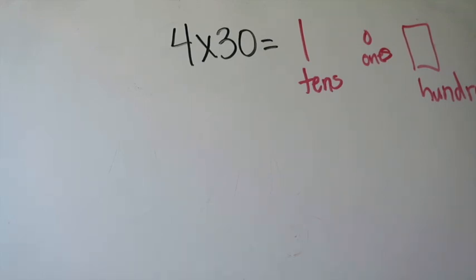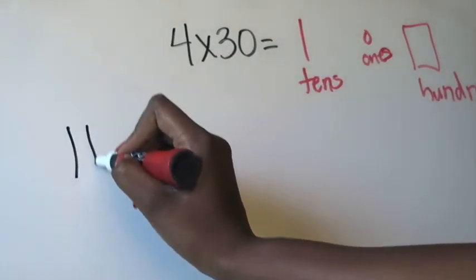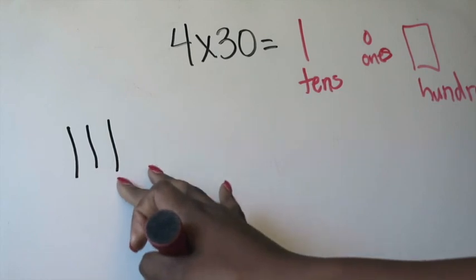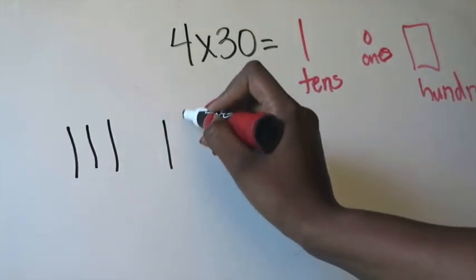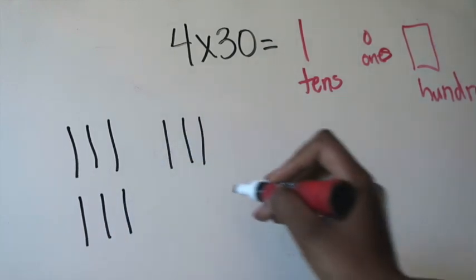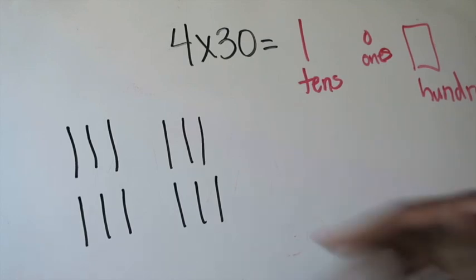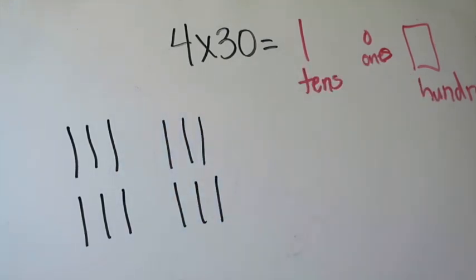Now that I've reminded myself of that, I'm going to go ahead and start by drawing out my four groups of 30. Group 1: 10, 20, 30. Group 2: 10, 20, 30. Group 3: 10, 20, 30. And group 4: 10, 20, 30. So I've done that — I have four groups with 30. Now I'm going to check: do I have more than 10 tens? And if so, can I regroup? How many times will I regroup?